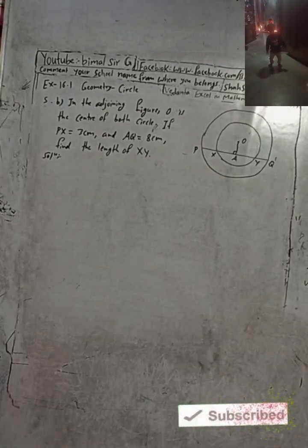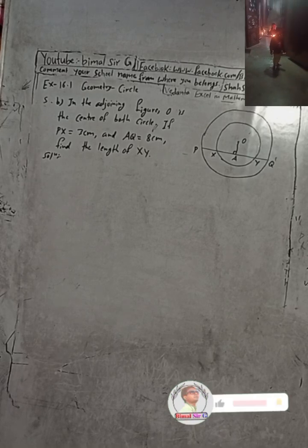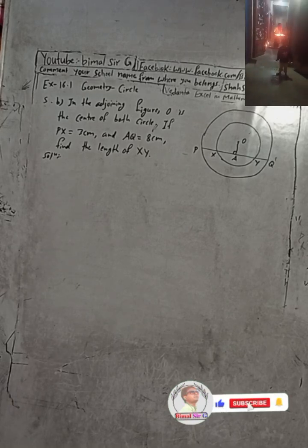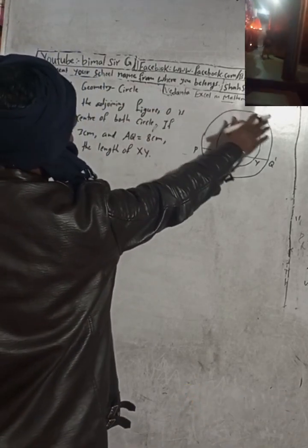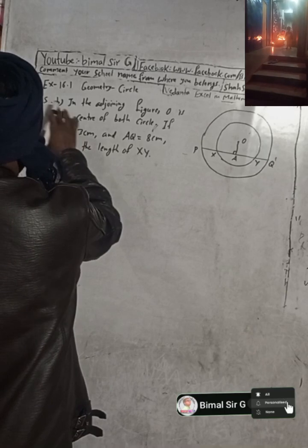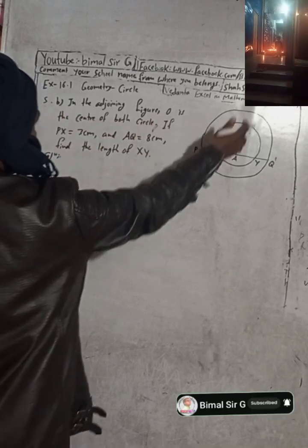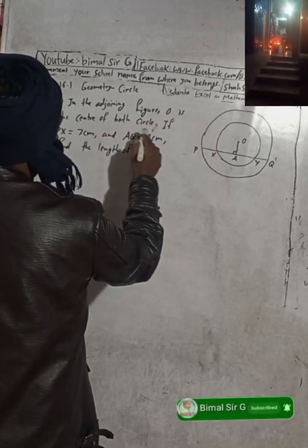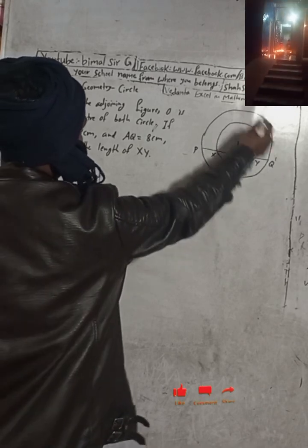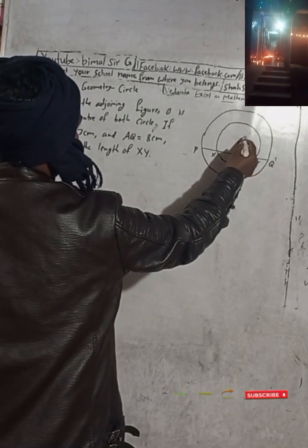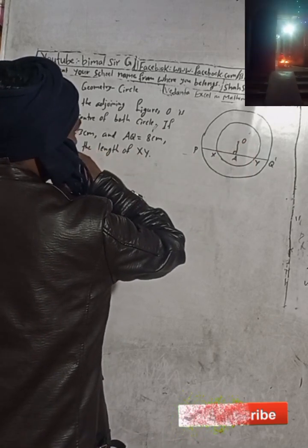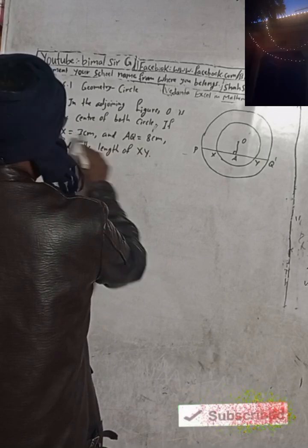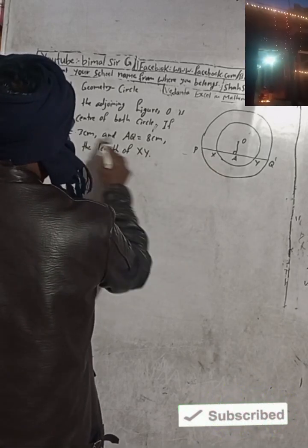Hi class 9 and 10 students, welcome back to Pimarsarji's YouTube channel. This is question number 5b, Exercise 16.1, Geometry Circle, Vedanta Excel in Mathematics class 9. In the given figure, O is the center of the circle — this is a concentric circle.